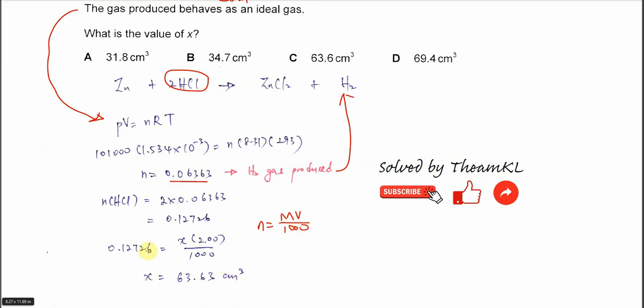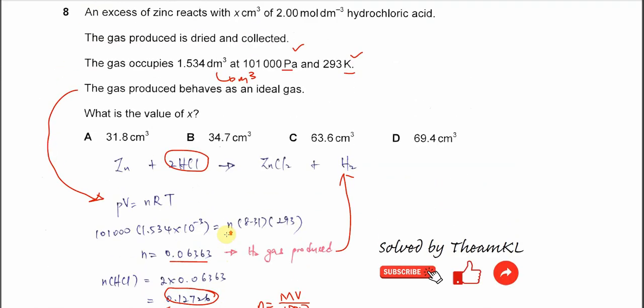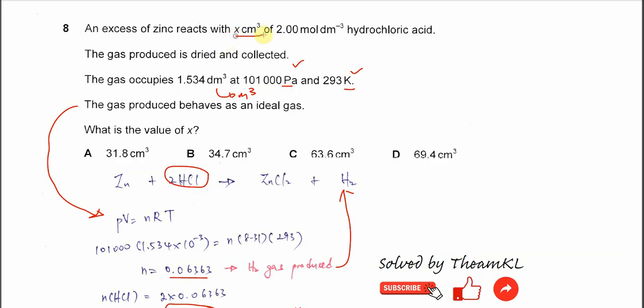So after that, rearrange, of course, substitutes the moles of HCl to this equation, because we need to find the X here, X cm³ of 2 moles per dm³ HCl.